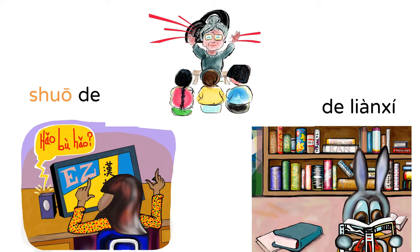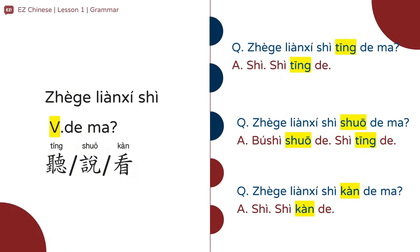练习。 Practice. 听的练习。 Listening practice. 说的练习。 Speaking practice. 看的练习。 Reading practice. 这个练习是听的吗? Is this listening practice? 是听的。 Yes, it's listening practice. 这个练习是说的吗? Is this speaking practice? 不是说的，是听的。 It's not speaking practice — it's listening practice.